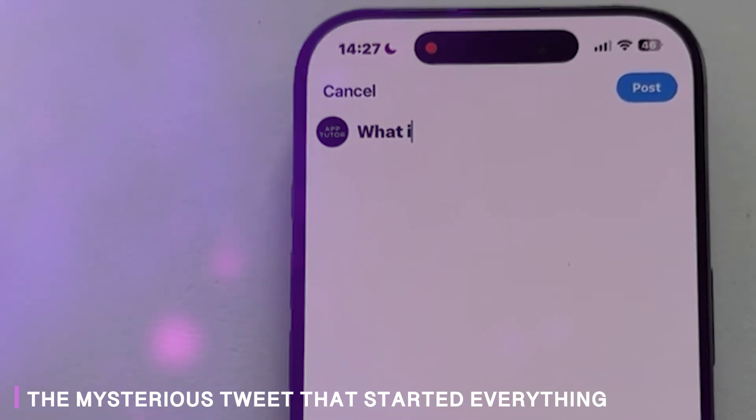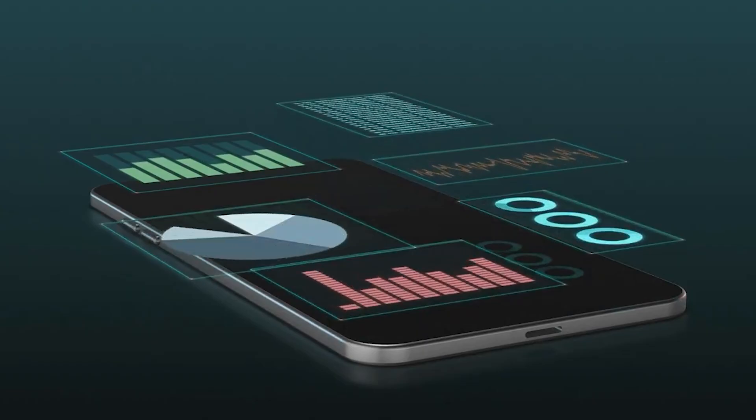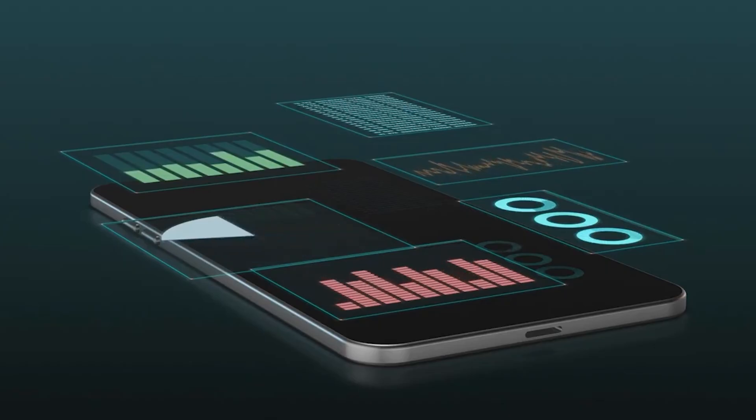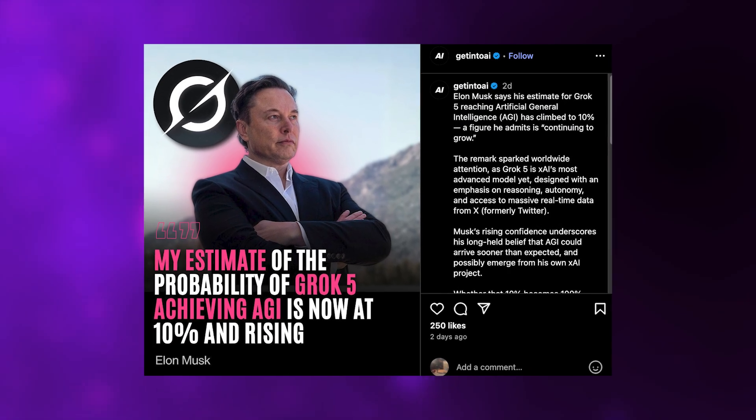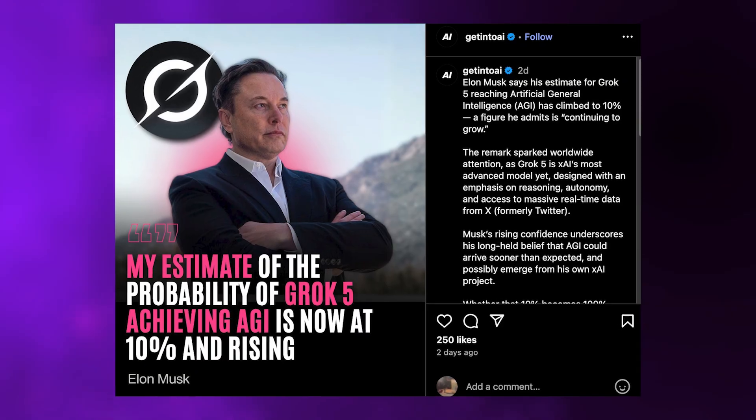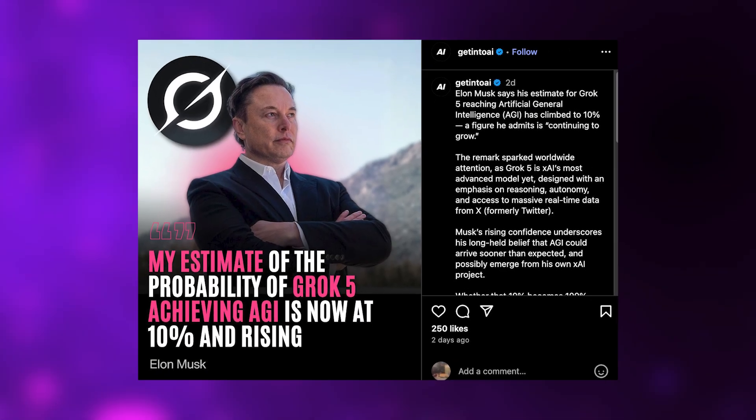The mysterious tweet that started everything. A few days ago, a seemingly casual social media exchange caught the attention of AI researchers worldwide. Elon Musk, never one to shy away from bold predictions, made a statement that sent shockwaves through the tech community. He claimed that the probability of achieving artificial general intelligence with their upcoming system had reached 10% and was climbing rapidly.